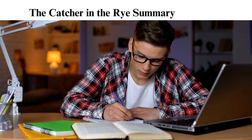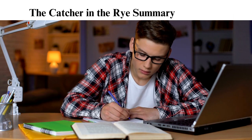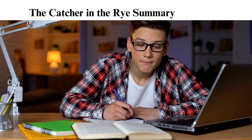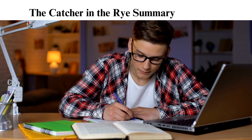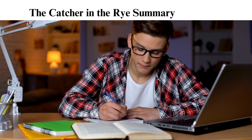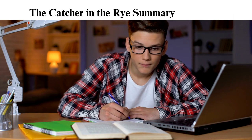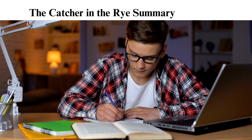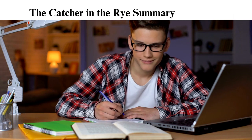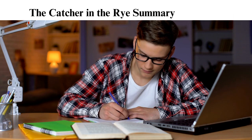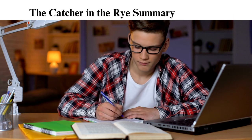The Catcher in the Rye Overview. This novel was written by J.D. Salinger and published in 1951. The story has a narrator, Holden Caulfield. He is a teenage boy expelled from prep school who wanders in New York City before he gets home. Holden struggles with loneliness, fear of loving, identity crisis, and fakeness in the adult world.